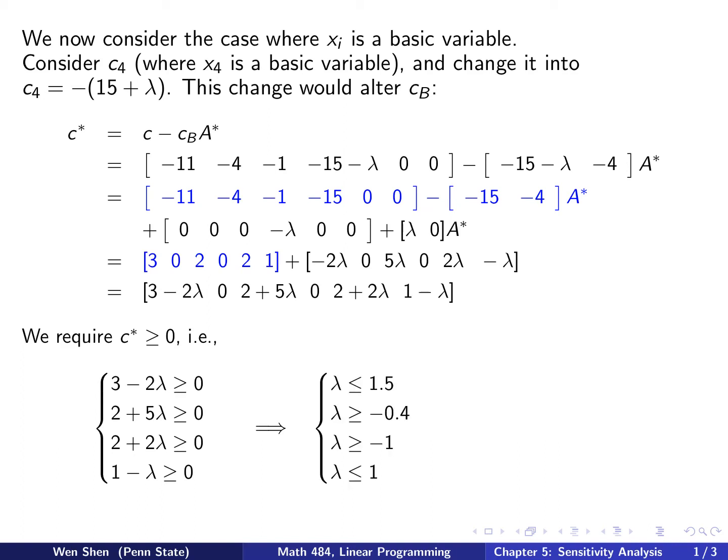Then we can go through each inequality and write out the constraint on lambda. So for example, the first one, you can move two lambda to the right-hand side, divide both sides by 2, you get lambda less than 1.5. You can go through the rest, and then you get these conditions. So this means all of these four must be satisfied.